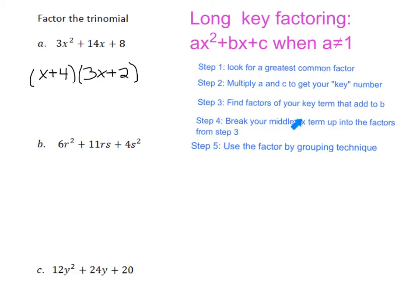Which is multiply A and C to get your key number. So we're going to multiply A times C. So our key number is going to be, our key will be 6 times 4 is a positive 24.